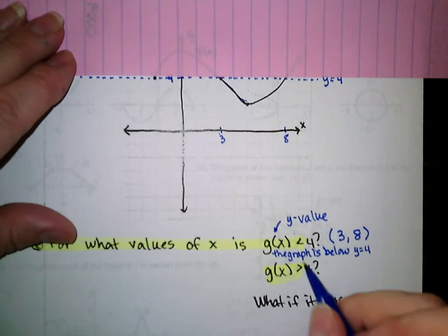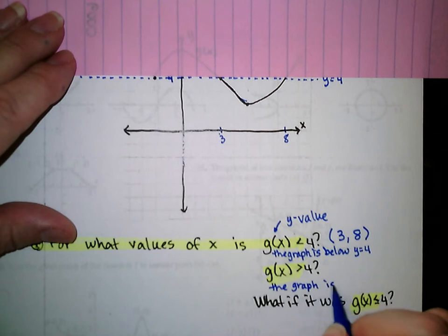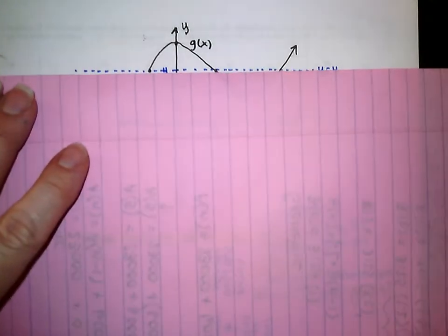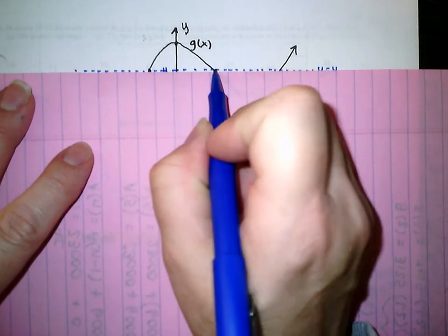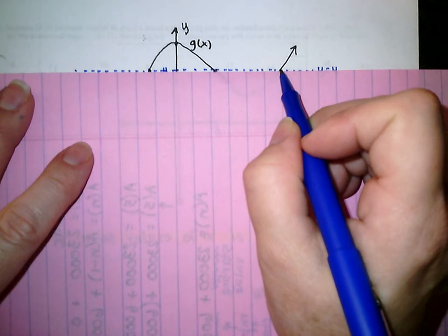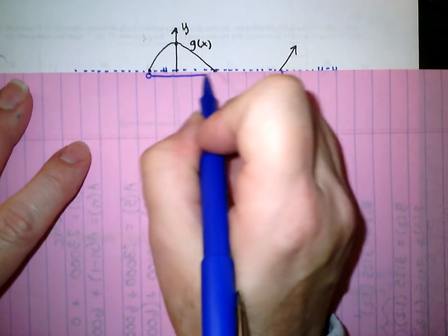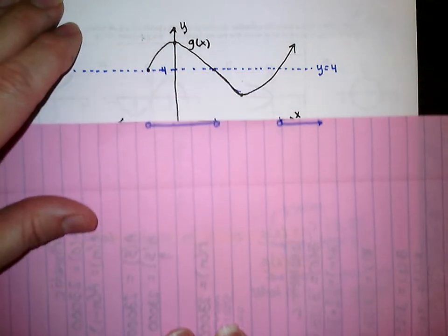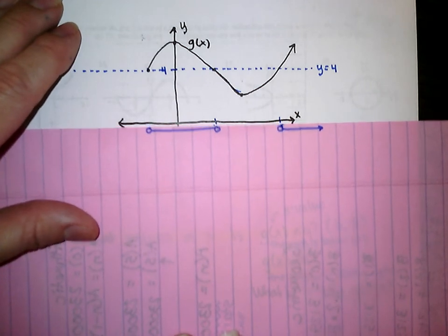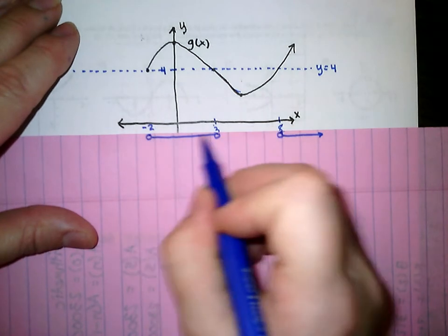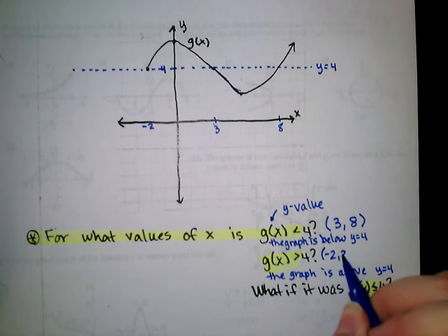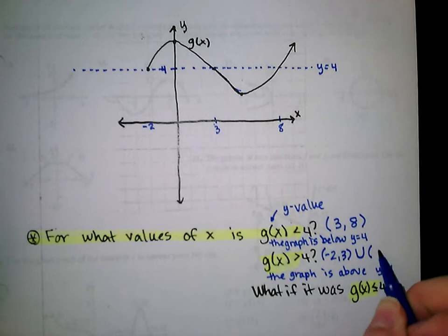What about when it's greater than 4? That means the graph is above y equals 4. I look at where my graph is above y equals 4 — that happens from negative 2 to 3, and then from 8 to infinity. When we have a gap in interval notation, we use the union symbol. So the answer is negative 2 to 3, union 8 to infinity.